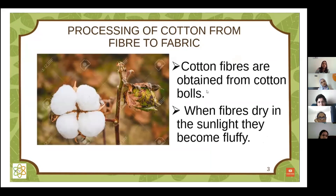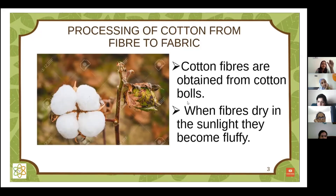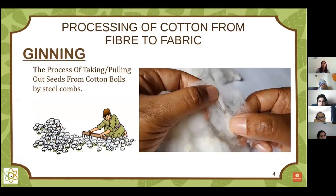When it is raw cotton on the plant, the spelling is 'bolls' (B-O-L-L-S). When we are cleaning it and making round shapes, it is called 'balls' (B-A-L-L-S). When these fibers dry in the sunlight they become fluffy.